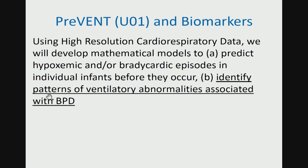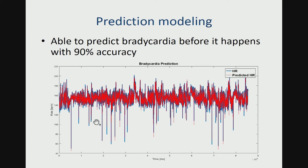The other study is the PREVENT project, another U01, in which we are using high-resolution cardiorespiratory data and developing mathematical models to predict hypoxemic and bradycardic episodes — apneic episodes — in individual infants before they occur, and also to identify patterns of ventilatory abnormalities associated with BPD. We have developed mathematical models able to predict bradycardia before it happens with very high accuracy: the blue line is actual heart rate and the red line is predicted heart rate, with very close overlap. We're thinking of developing a device to alert nurses before an apnea actually occurs, and the question is whether we can predict long-term three-month outcomes with sufficient accuracy.